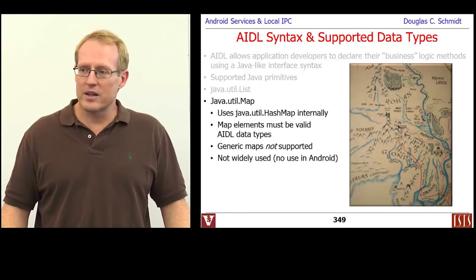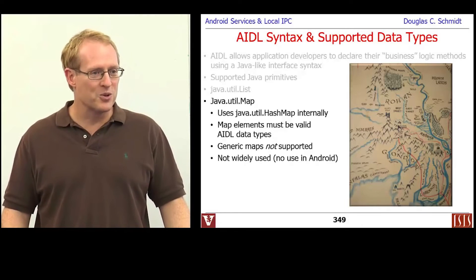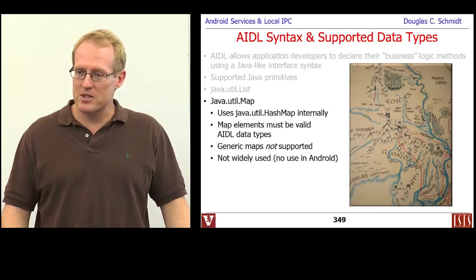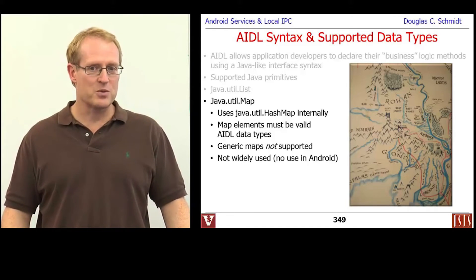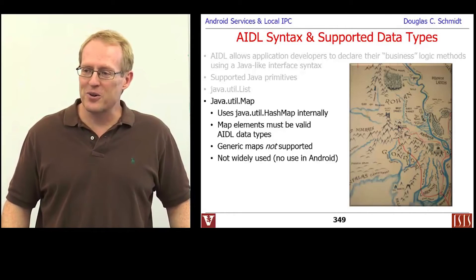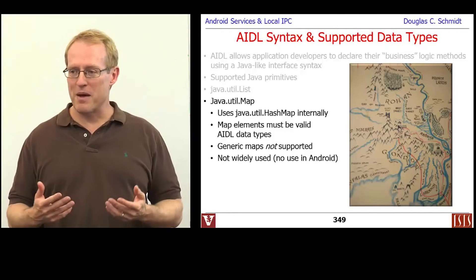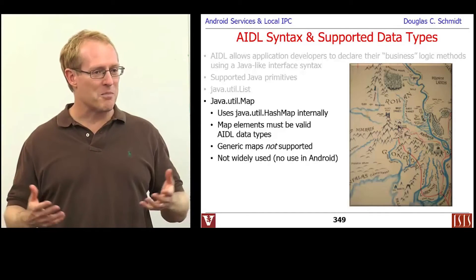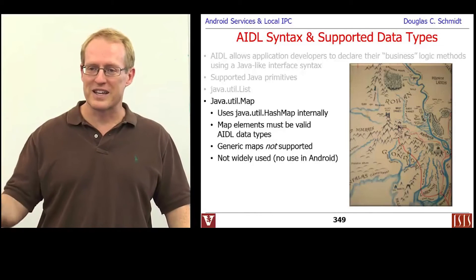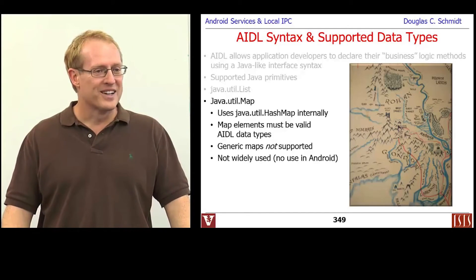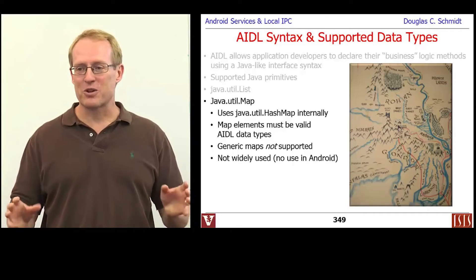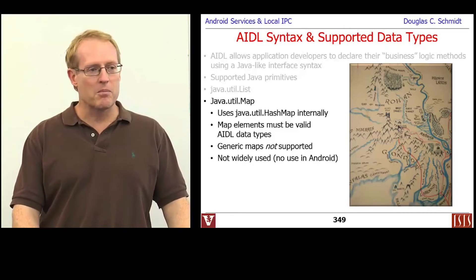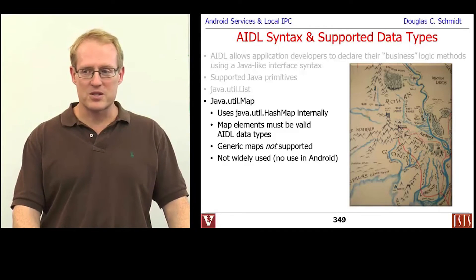There's also something called a Map, which under the hood maps to the underlying Java HashMap. They don't support generic maps — you have to give it a type, unlike lists where you can use generics. Looking through the Android source code, I couldn't find any examples of maps being used, so they're available if you want to use them, but people tend to use parcels and parcelables instead.